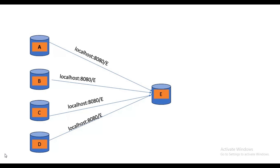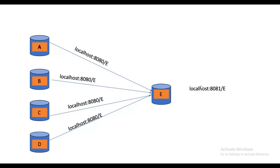Let's assume we have five microservices A, B, C, D, E. A, B, C, D will communicate with E using Feign Client. You guys know about RestTemplate, RestClient, and Feign Client, right? We are using Feign Client for communication and have a hardcoded URL. Let's assume due to some reasons, the service URL got changed from localhost 8080 to localhost 8081.